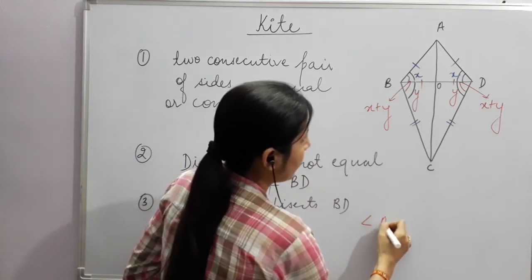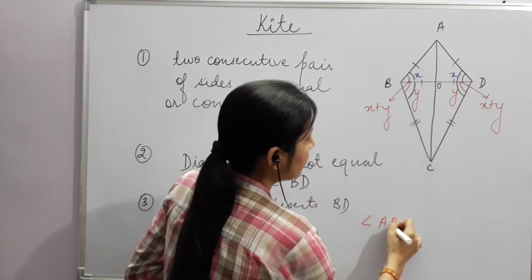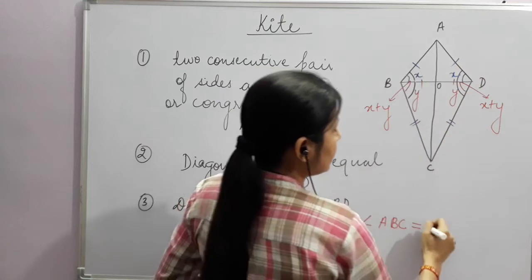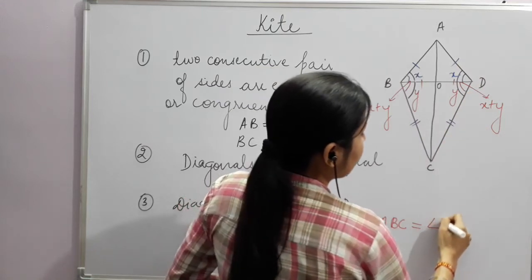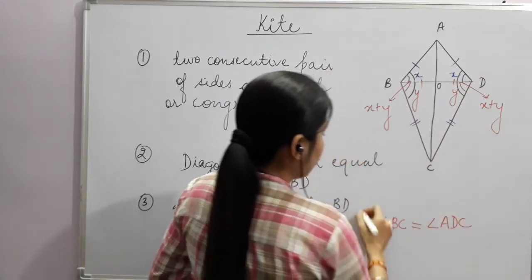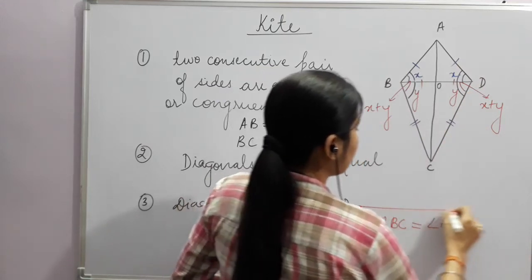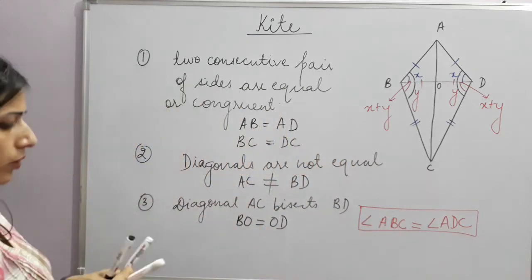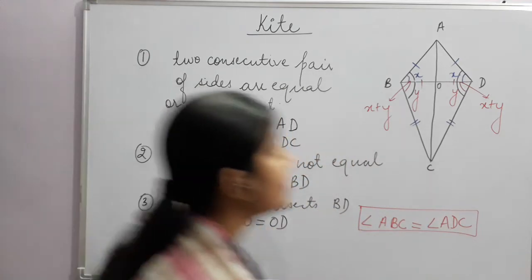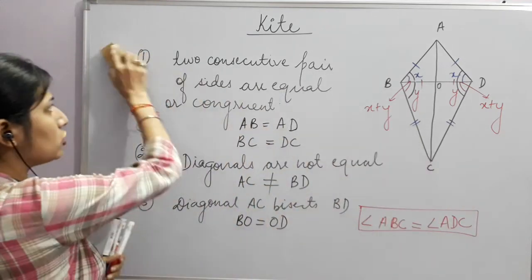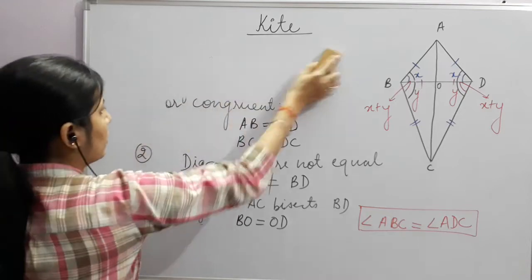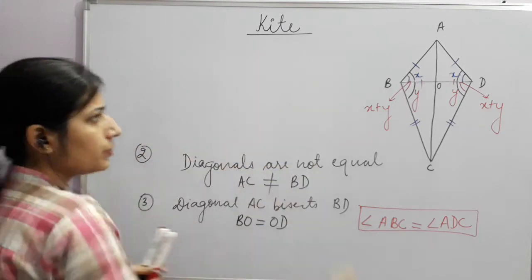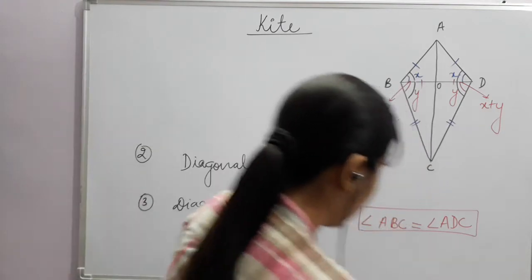So we write: angle ABC = angle ADC. We can also show the individual sub-angles are equal. Let us write those individual equal angles as well.